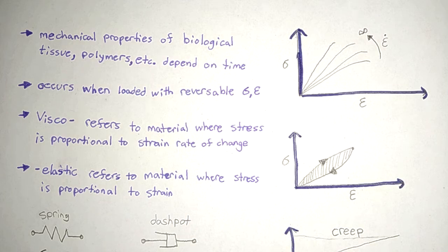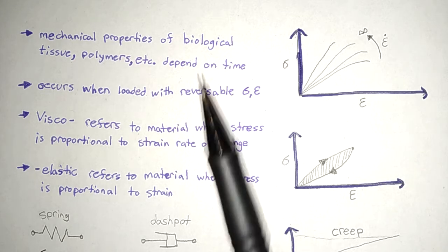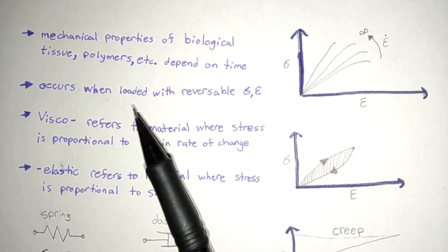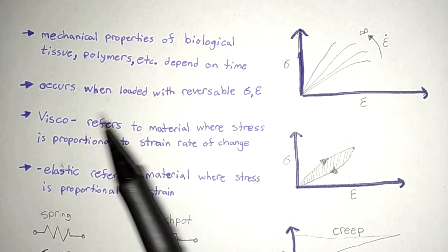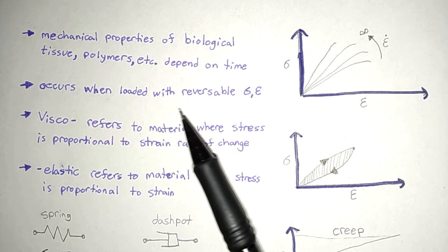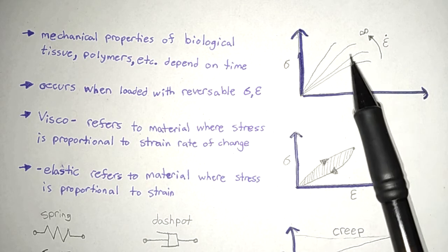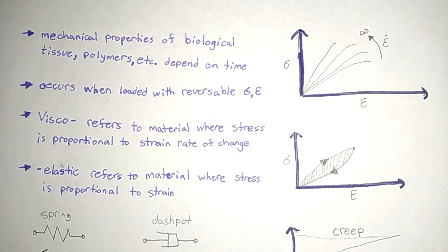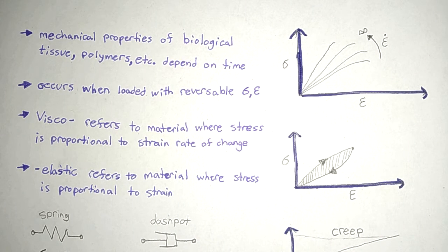So finally, it's time to explain viscoelasticity. Mechanical properties of biological tissue, polymers, and other materials inside the body depend on time. So the rate at which you try to apply the force is also a factor, not just the stress that you applied or the strain that it forms.